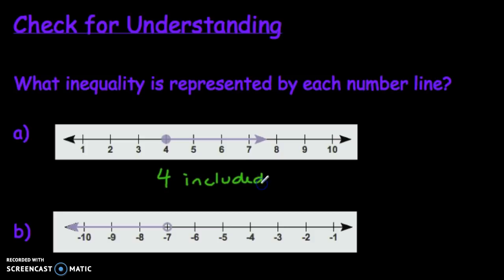All the numbers to the right of 4 are being represented with shading into an arrow, so we're looking at the numbers that are larger than or equal to 4. If you put x is greater than or equal to 4, that's correct.